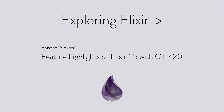Hi, I'm Aaron, and this is Exploring Elixir Extra for Episode 2. In the main episode, we benchmarked Elixir 1.5 running in OTP20 against Elixir 1.4 running in OTP version 18 for pattern matching of maps and ETS table performance. But the release of Elixir 1.5 and OTP20 are much more significant than just those two performance enhancements. The release announcements were really quite long and listed a lot of things, so I decided to split it out into an extra that looks at some of the more detailed features. Let's dig right in.